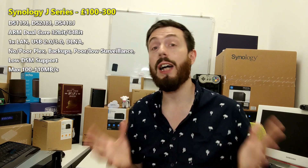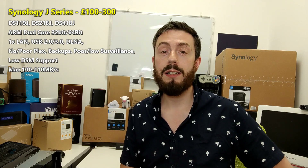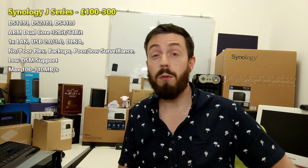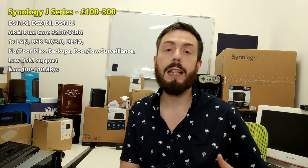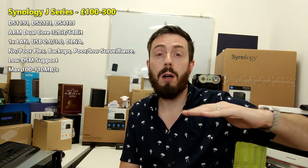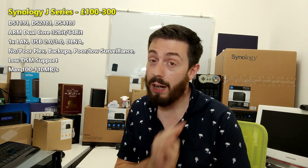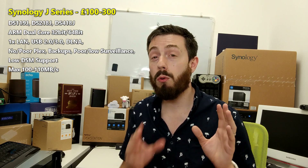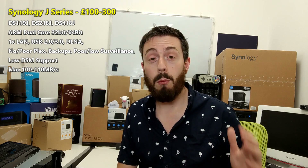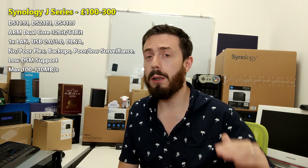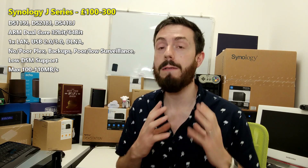I still don't know what the J stands for — I'm going to go with 'just enough.' The J series at the moment spans the DS218J, the 418J, and the 119J. What all of these NASes have in common is the fact that they give you a base level of hardware to get the minimum done — things like DLNA media streaming, very low level surveillance, and backups. But crucially, you can't do many of these things at the same time, with the 119J being a particular example of very low power access to Synology's DSM 6.2 software in a much more streamlined fashion.